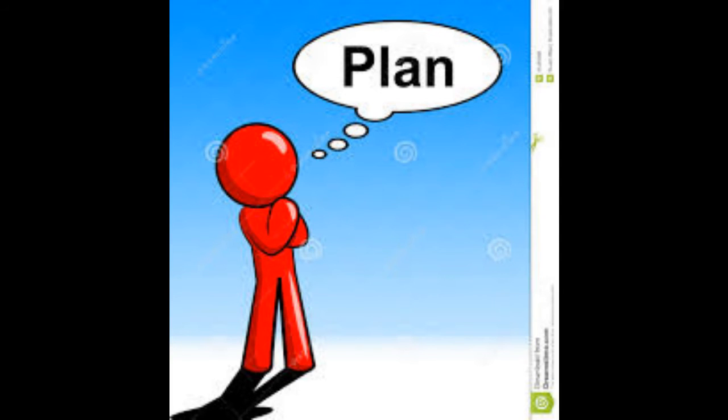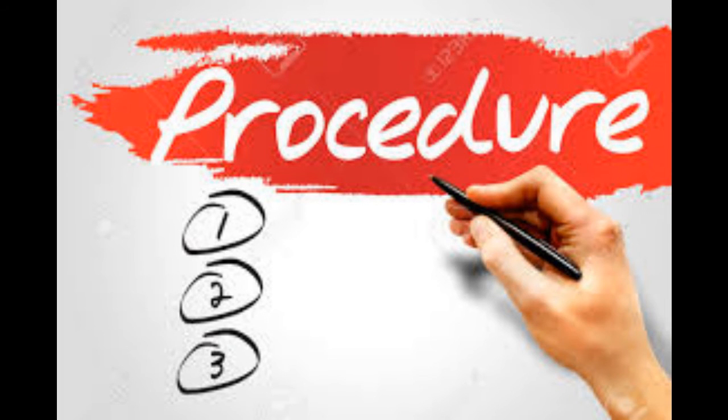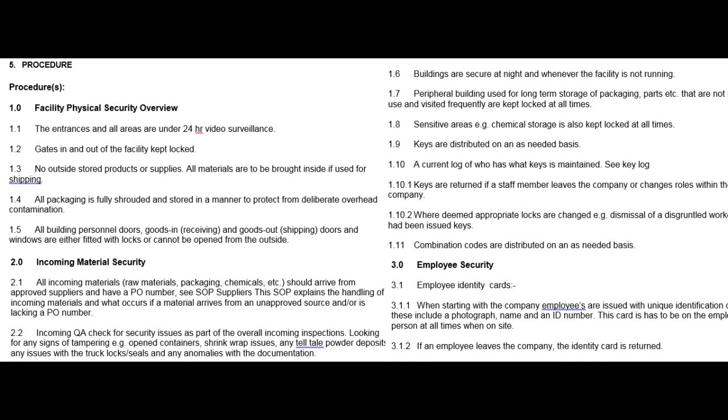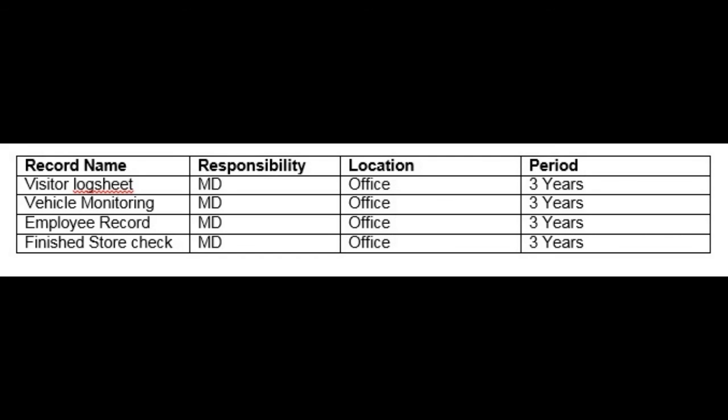Now let's see how to make the procedure for food defense. There are 5 main headings: 1. Scope — define the boundaries and applicability of your procedure. 2. Purpose — define the objective of the procedure. 3. Definitions — define the meanings of difficult terms used in the procedure. 4. A step-by-step plan describing the system you follow to control food defense hazards based on your risk assessment. 5. Records — the records you will maintain to assure proper implementation of this procedure.